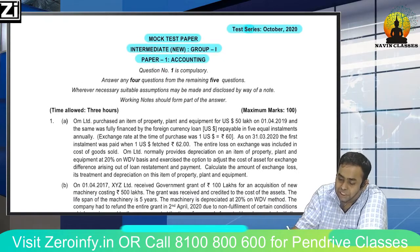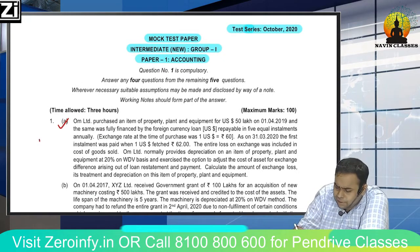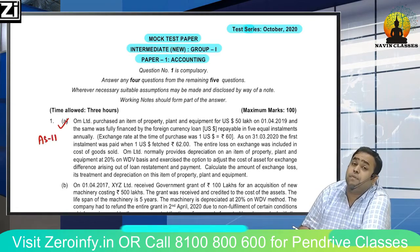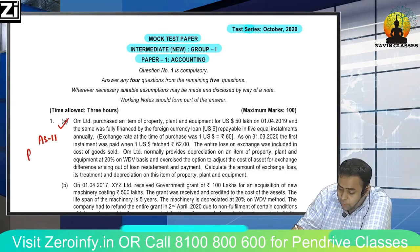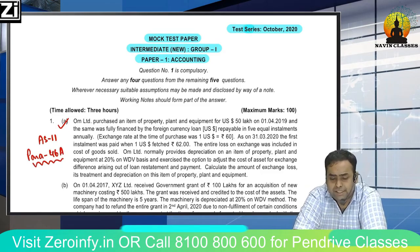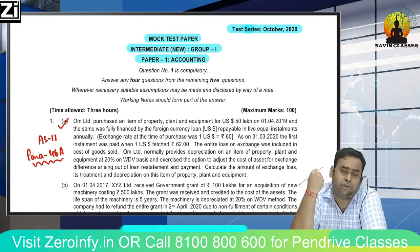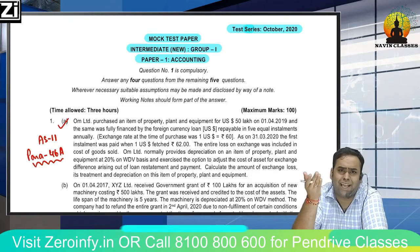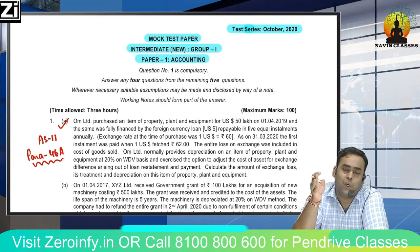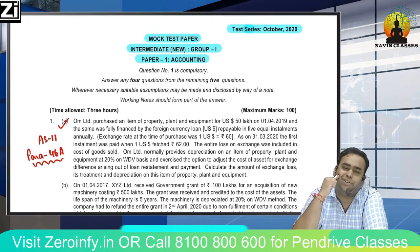The first question I want to do is Question 1A. This question is on Accounting Standard 11 - The Effects of Changes in Foreign Exchange Rates, specifically about Para 46A. If a foreign currency monetary item — like receivables, payables, cash, cash equivalents etc. — we restate at the closing exchange rate, and the exchange difference is normally put in Profit & Loss.